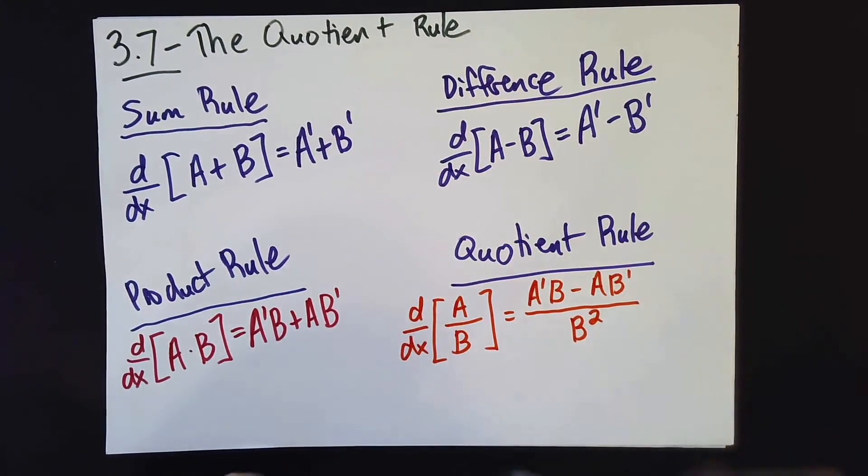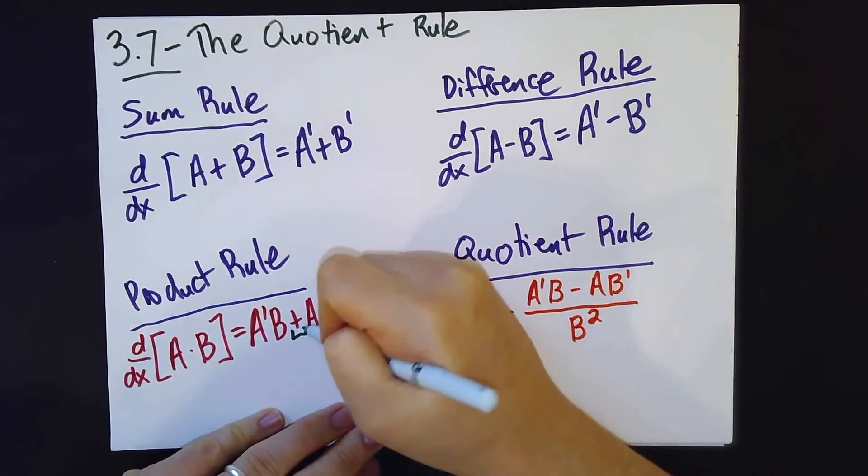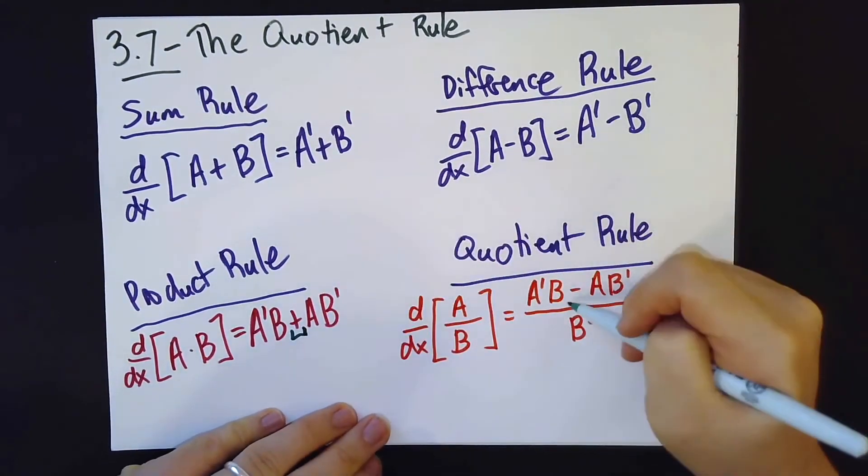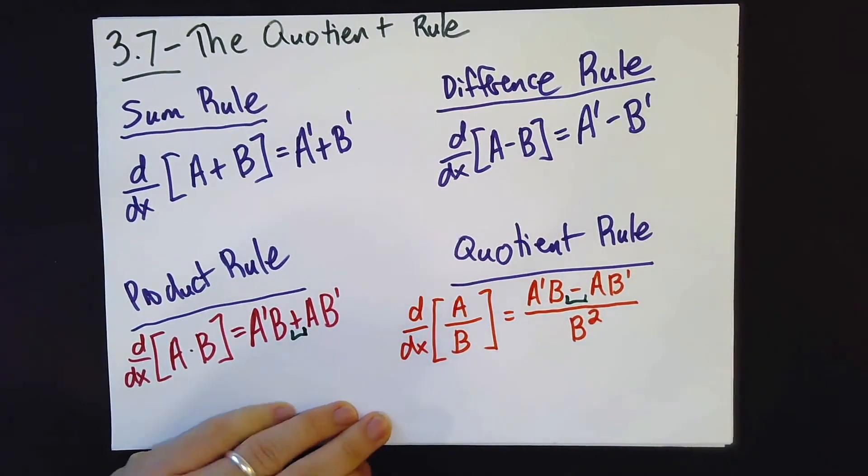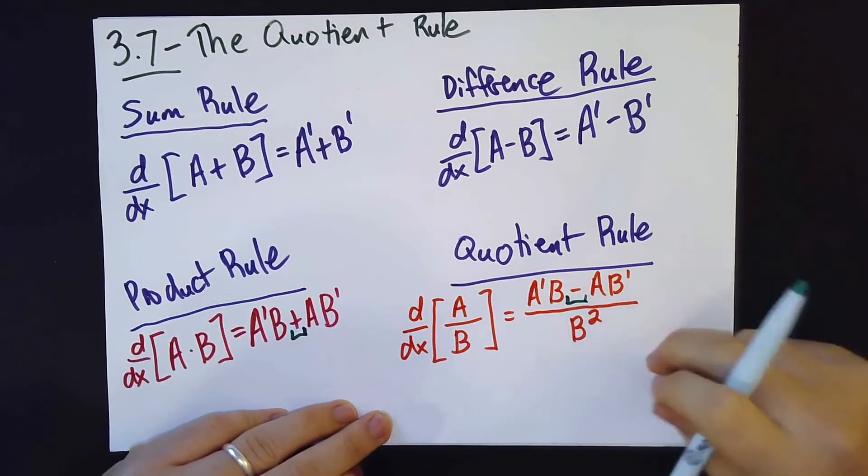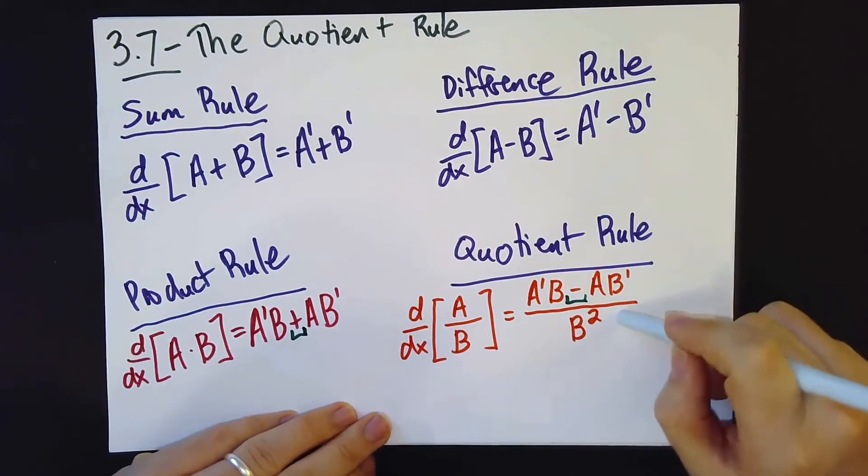The difference is, in the product rule there's a plus sign, and in the quotient rule there is a minus sign, and then also in the quotient rule we have to at the end divide by b squared.